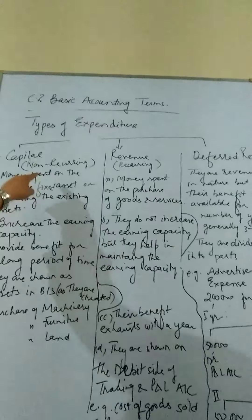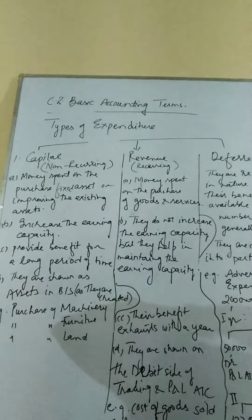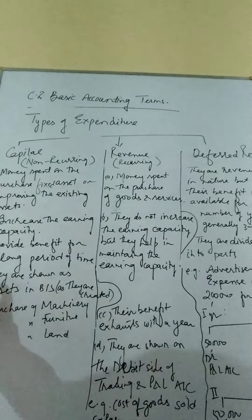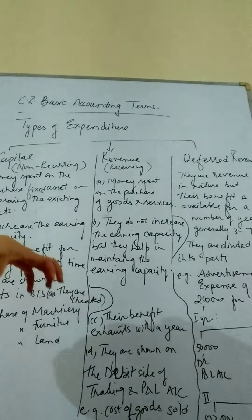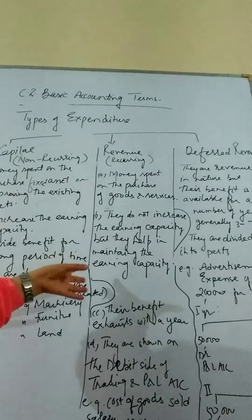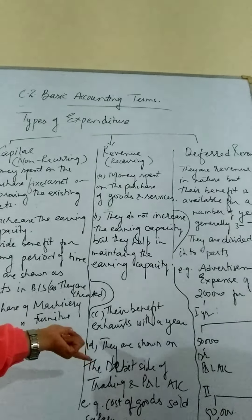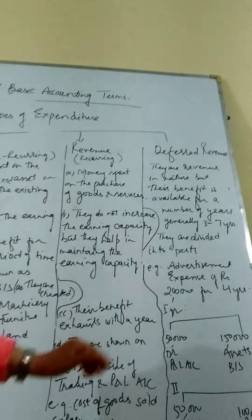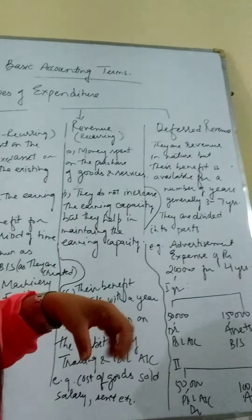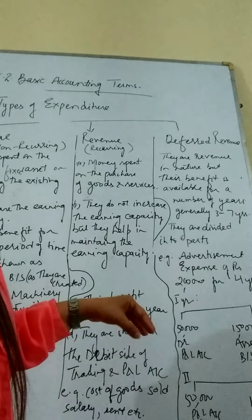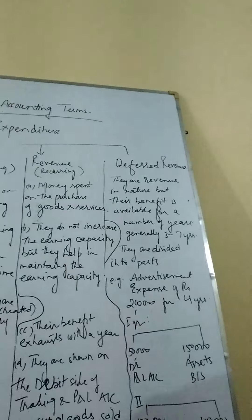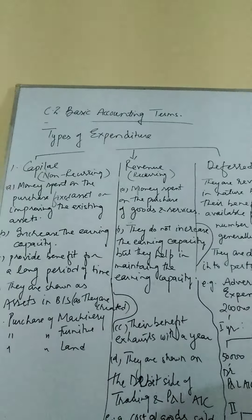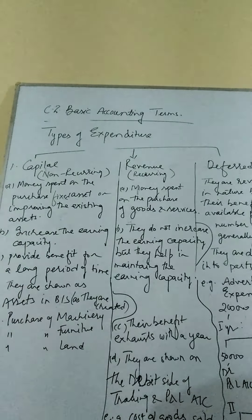So these are the 3 precise categories of expenditure: capital expenditure — a long-term expenditure for the purchase of fixed assets over a long period of time; revenue expenditure — for the day-to-day running of the business, generally exhausted within a span of one year and small in nature; and deferred revenue expenditure — a combination of the two, where part of it is shown as revenue expenditure in the P&L account and the part not yet used is shown on the asset side of the balance sheet.